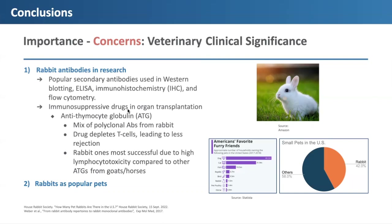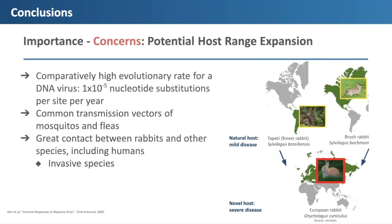Rabbits are also very popular household pets, as shown by statistics on the right, so it's important to protect them from viral infections. There is another concern: myxoma virus can expand its host range. The virus already jumped from South and North American rabbits to European ones, and the concern is that it may jump into even more species. This is because the evolutionary rate of myxoma virus is high for a DNA virus — 1×10⁻⁵ nucleotide substitutions per site per year. Additionally, it has two very common vectors — mosquitoes and fleas — and there is great contact between rabbits and other species, including humans, particularly since European rabbits are considered an invasive species.